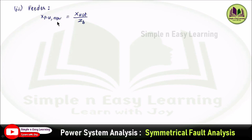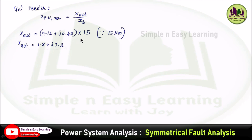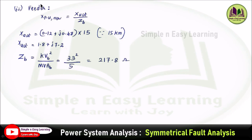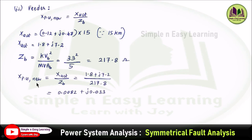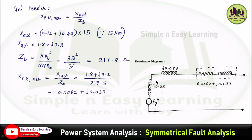For the feeder, use the formula: X_pu(new) = actual value of X / base impedance. The actual impedance is 0.12 + j0.48 ohm per phase per km, so for 15 km: 1.8 + j7.2 ohm. The base impedance Z_base = kV_B² / MVA_B = 33² / 5 = 217.8 ohm. Therefore, X_pu = (1.8 + j7.2) / 217.8 = 0.0082 + j0.033 per unit. The complete reactance diagram shows the generator reactance j0.08, EMF E_G'', transformer j0.083, and feeder 0.0082 + j0.033.